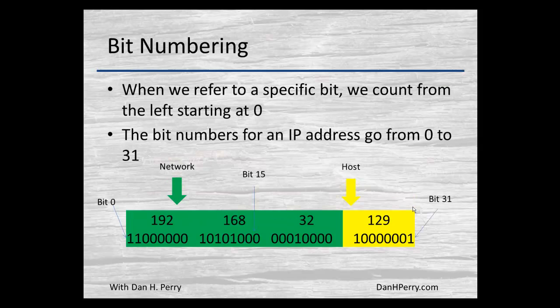When we talk about numbering of bits — which we'll cover in future episodes — we start numbering our bits at the left, beginning at 0. So the leftmost bit is bit 0.